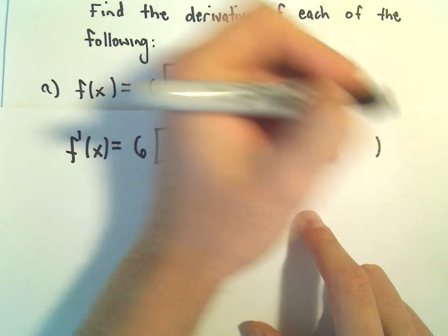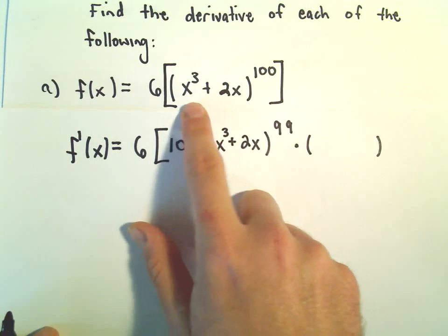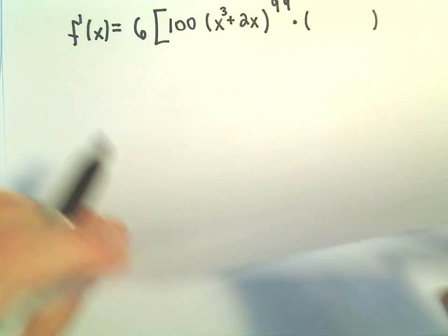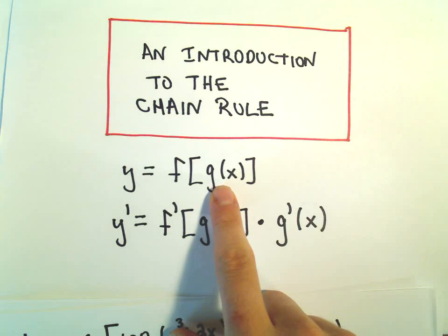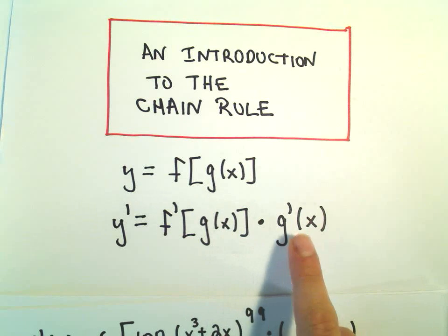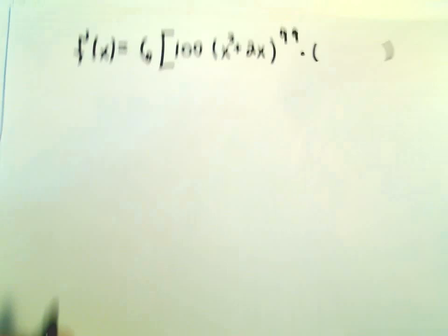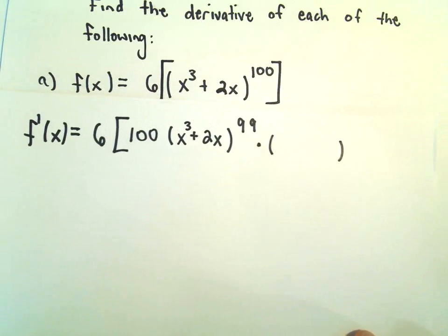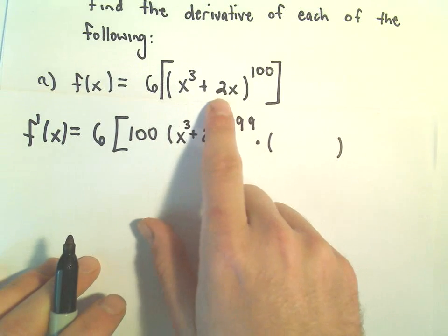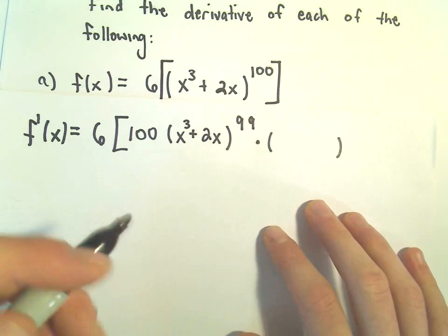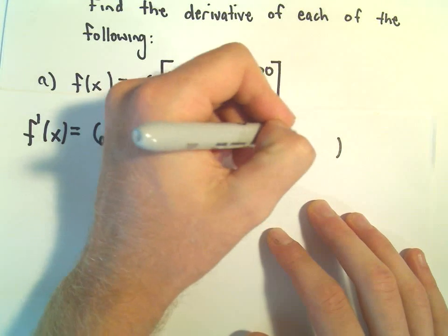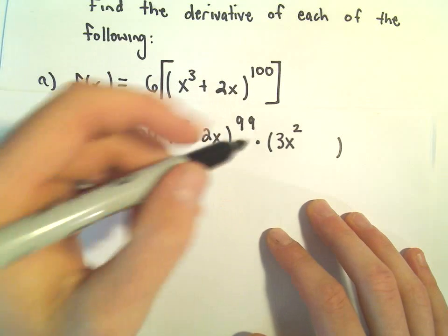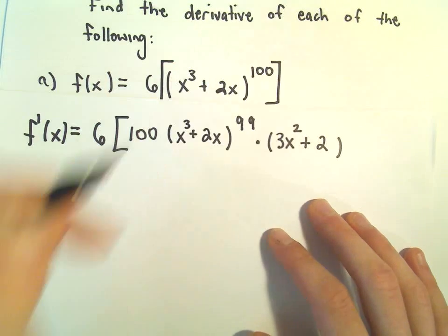And now, we have to take the derivative of the inside part. That's what the chain rule is saying here. It says whatever is on the most inside, at the end, we take the derivative of that stuff. The most inside part, to me, is the x cubed plus 2x. When we take the derivative there, the x to the third will give us 3x squared. And then the derivative of positive 2x will just be positive 2.